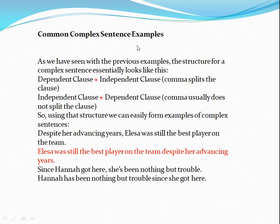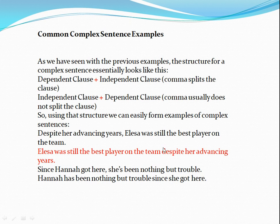The formula for complex sentences: dependent clause plus independent clause — a comma splits the clauses. Independent clause plus dependent clause — a comma usually does not split the clauses. Using that structure: 'Despite her advancing years, Alyssa was still the best player on the team.' Or: 'Alyssa was still the best player on the team despite her advancing years' — no comma. 'Since Hannah got here, she has been nothing but trouble.' Or: 'Hannah has been nothing but trouble since she got here.'